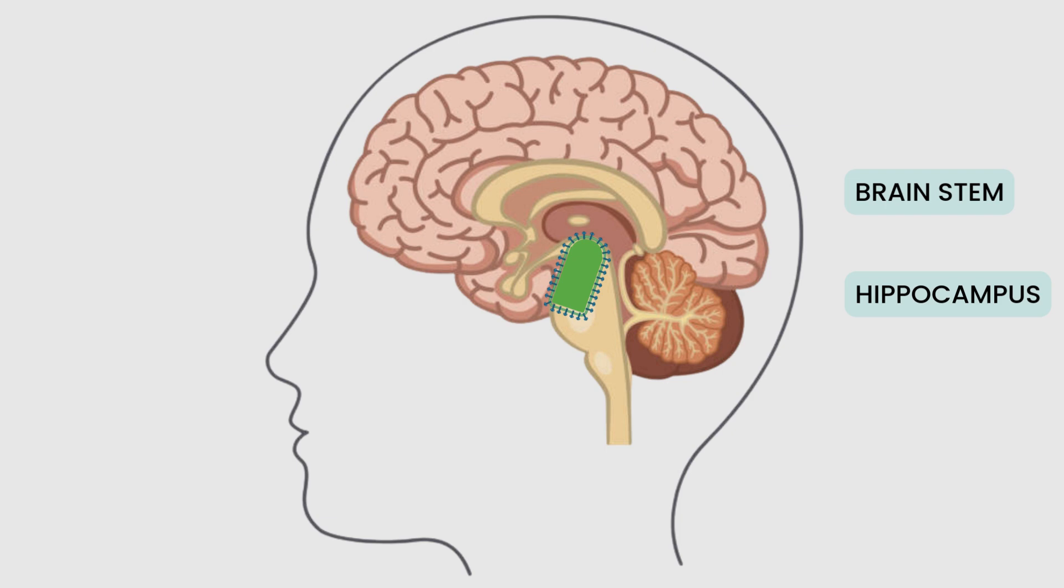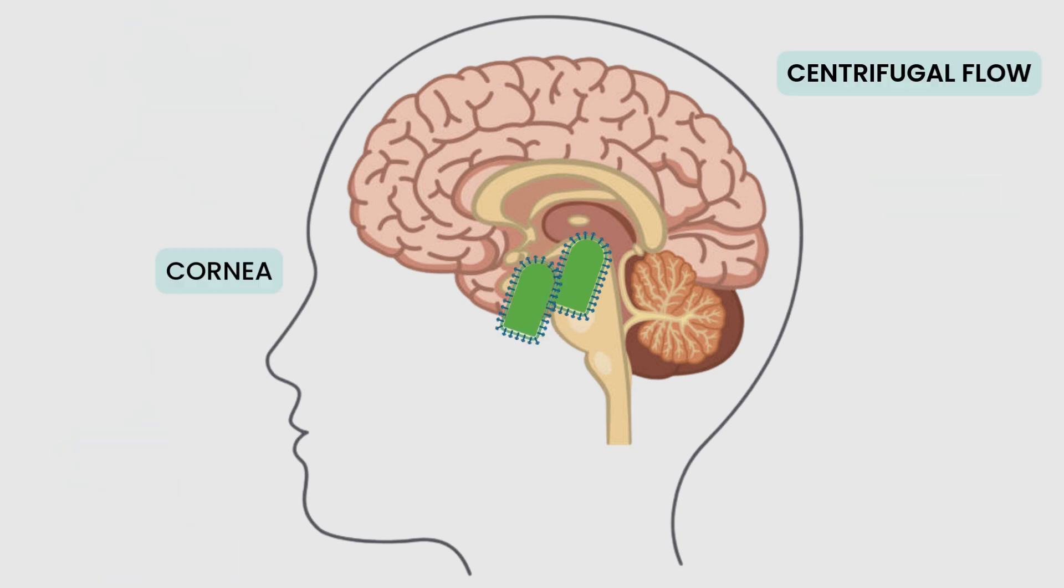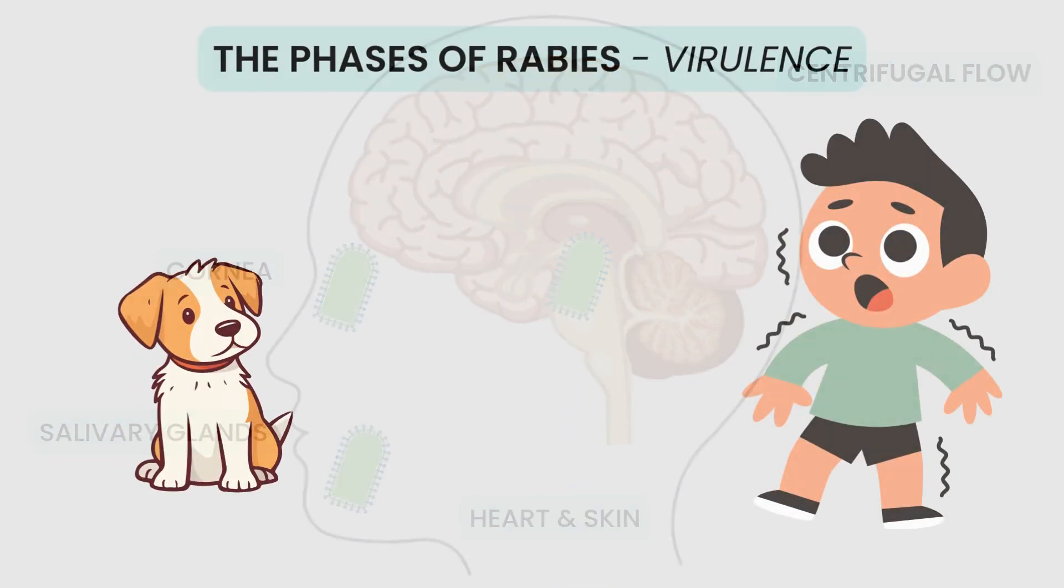The rabies virus then travels in an anterograde fashion from the neuronal cell body to the axon terminal. It also now travels centrifugally, that is from the central nervous system to peripheral tissues, and makes its way to the cornea, salivary glands, spinal cord, skin, and heart. The presentation in saliva makes the virus ready for its next host.